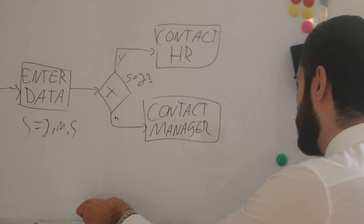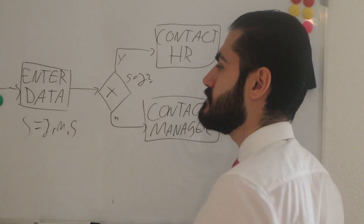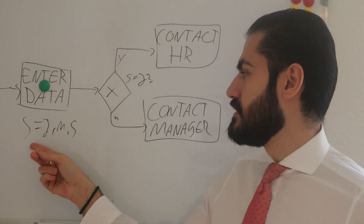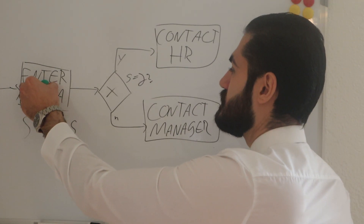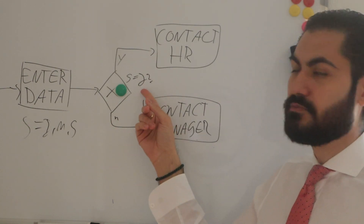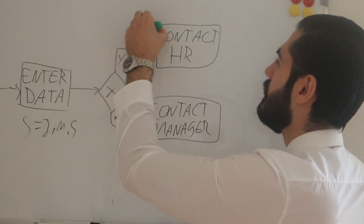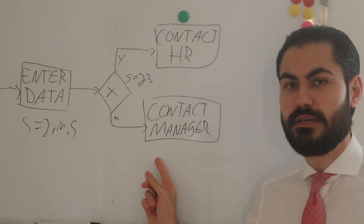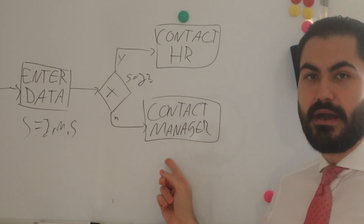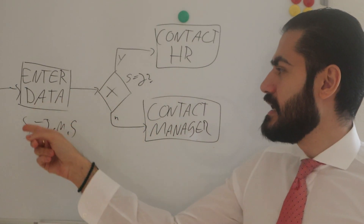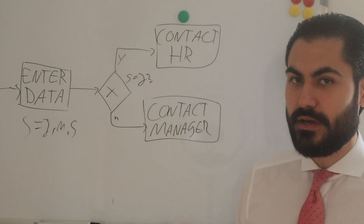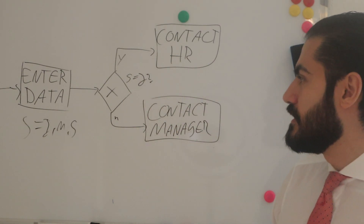So in this either-or gateway we've modeled a decision. The process token moves through: enter the data with seniority as J, M, or S, then arrives at the gateway. Is it junior or not? If yes, we go up — say 'contact HR'. If no, we go down and contact the manager. Only one route is possible. That's the either-or gateway.